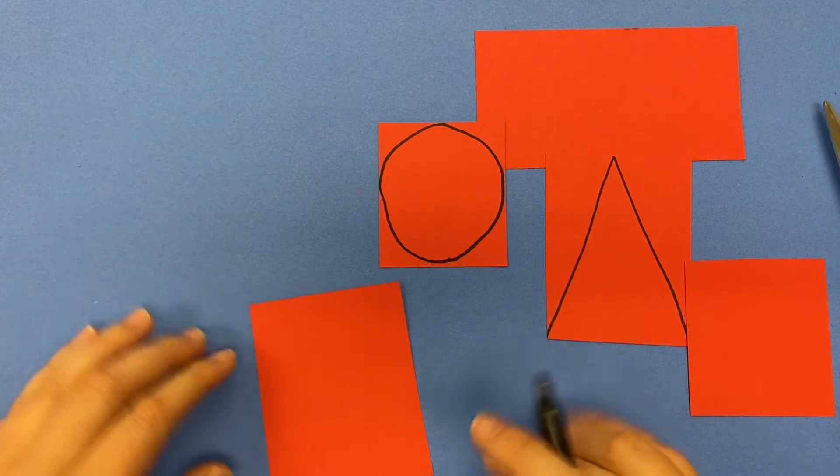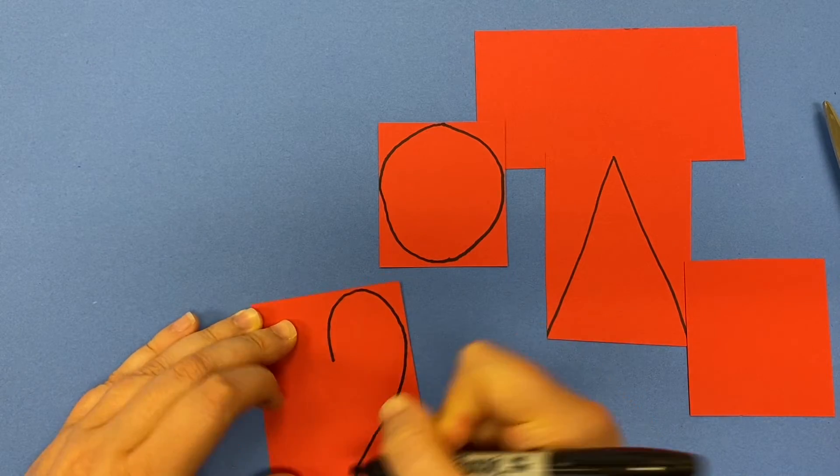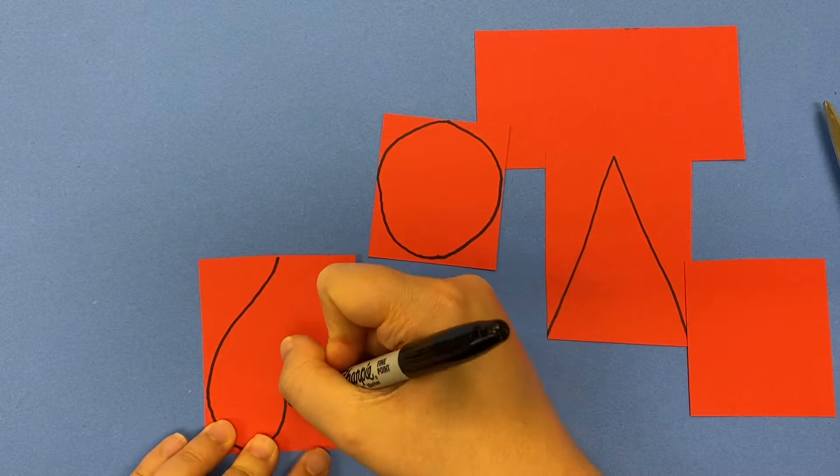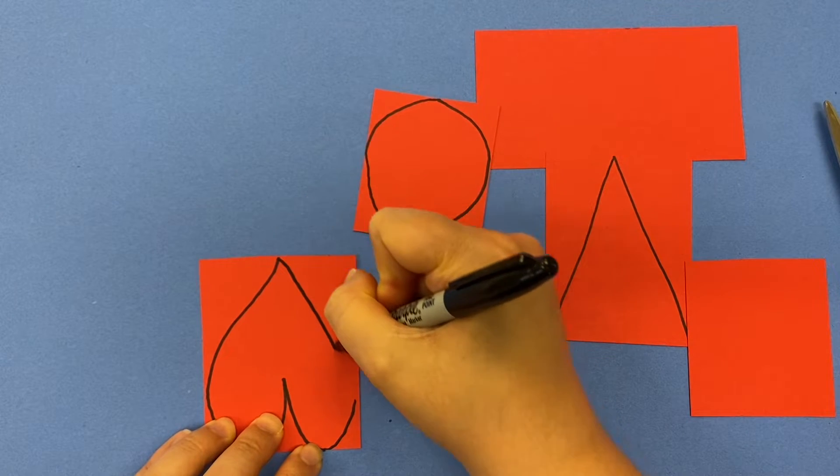You want your puzzle pieces to be big. If your puzzle pieces are small, it's going to be really hard to make your stabile stand up. So I've got five shapes, really big.